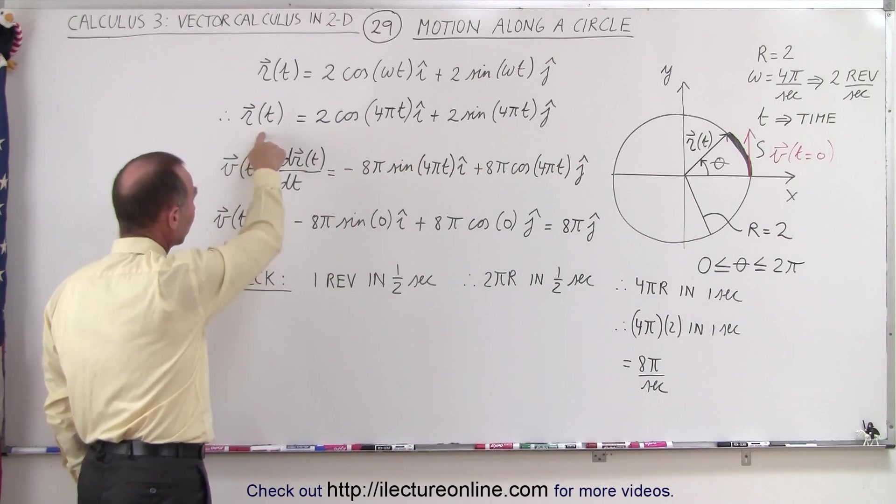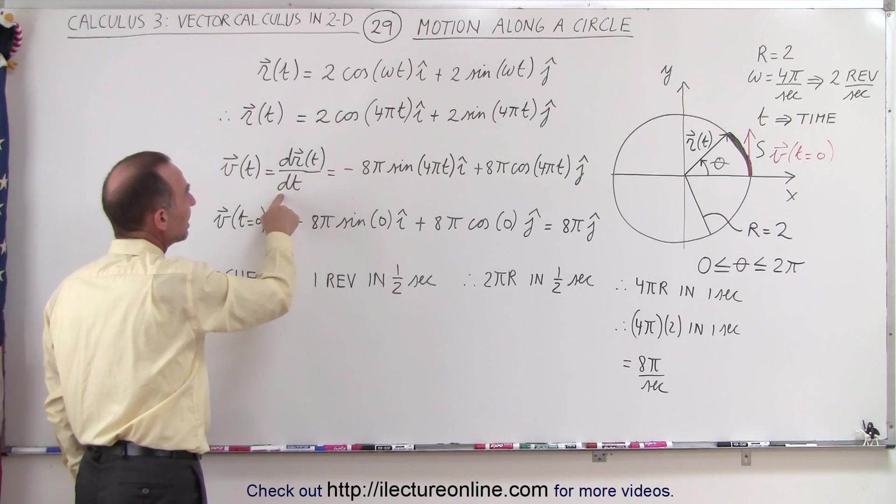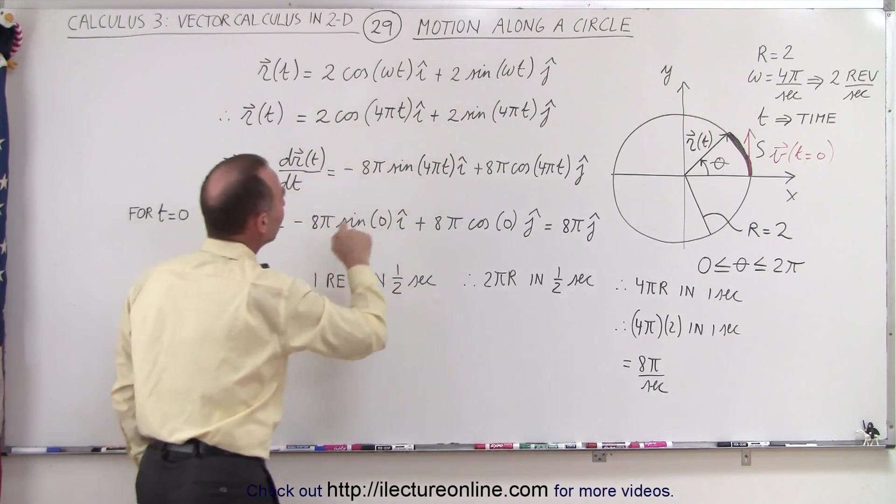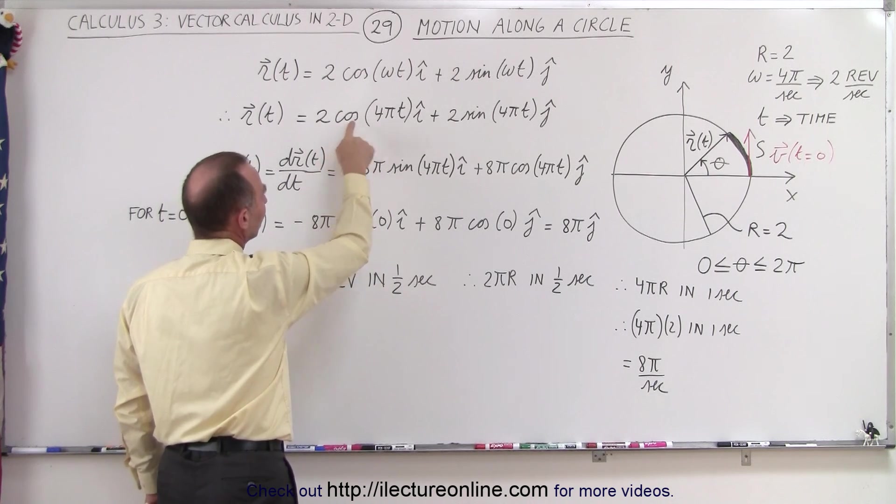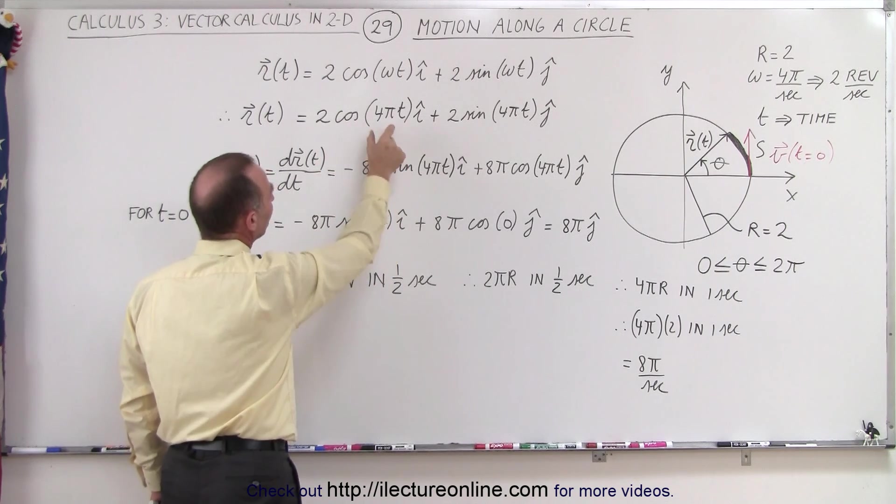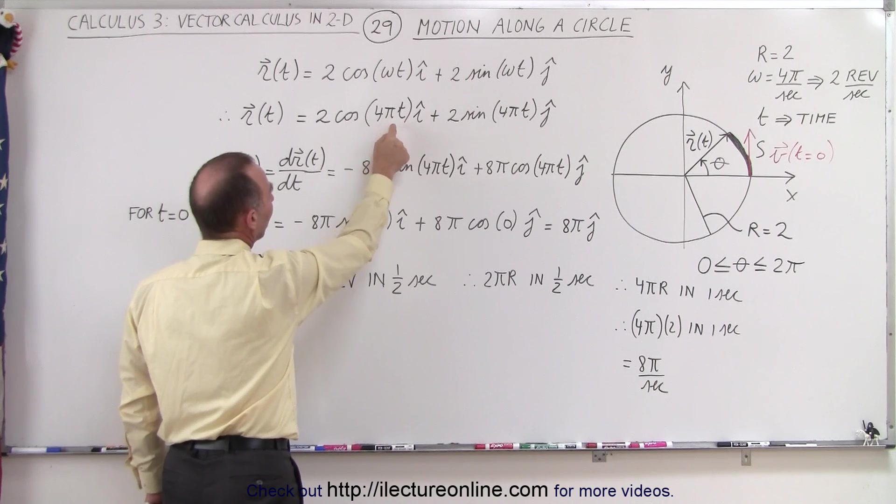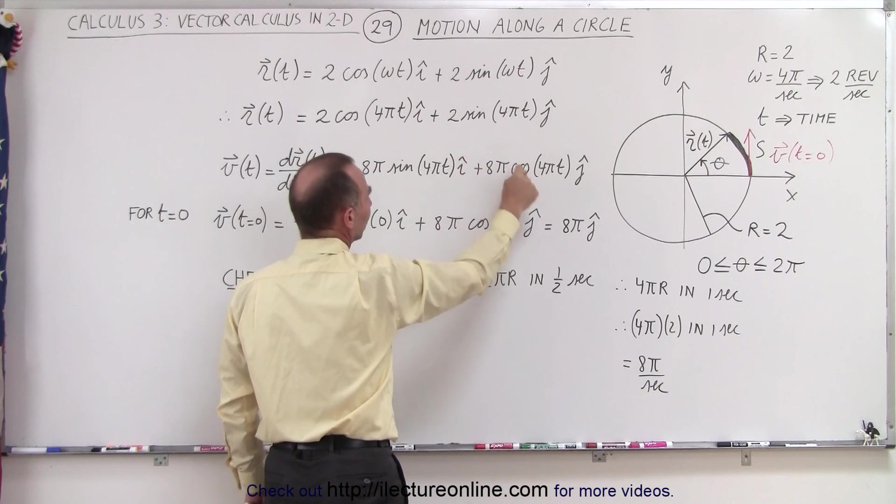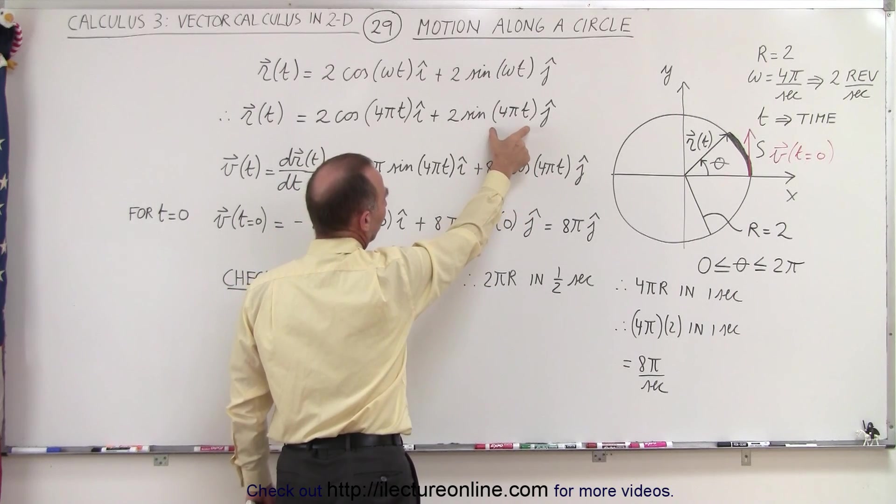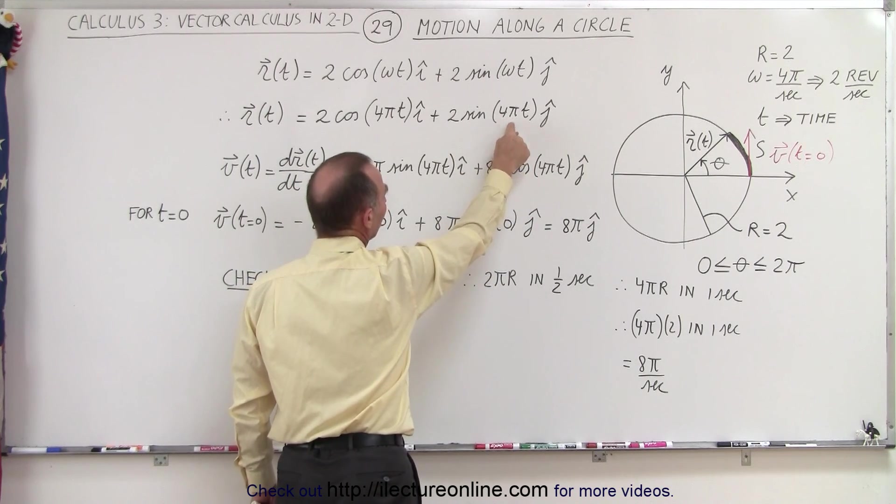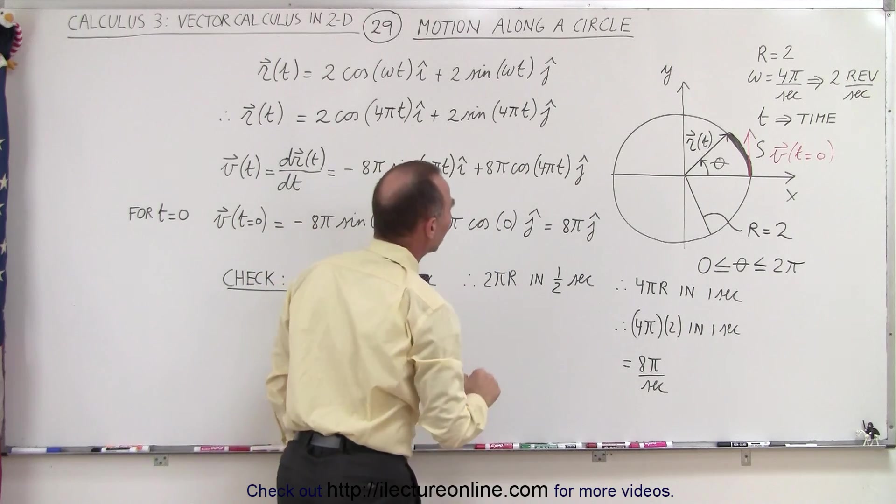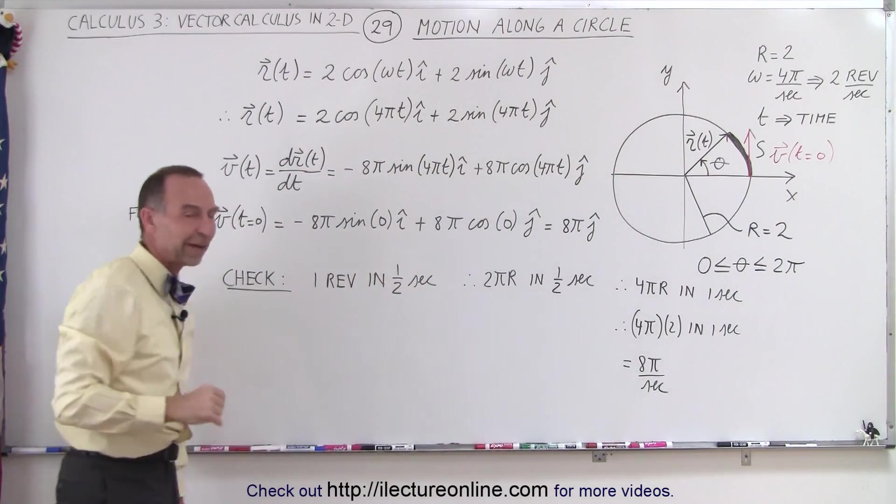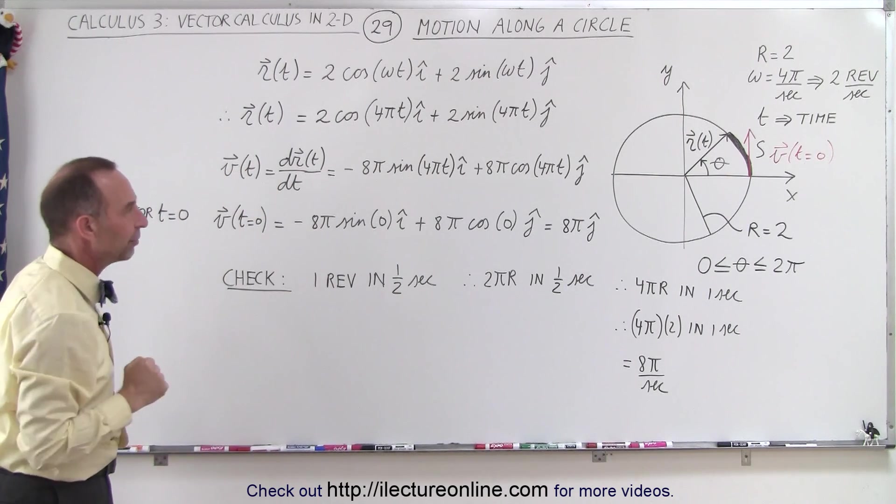And so when we take the derivative of the position vector, dr dt, and the parametric variable is t, then you can see that we have the derivative of cosine is the negative sine, and the derivative of 4 pi t is 4 pi, multiply that times 2, we get 8 pi. Same on this side, the derivative of sine is the cosine, the derivative of 4 pi t would be 4 pi, multiply that times 2, you get 8 pi. So now you can see this will be the velocity vector along the path of travel.